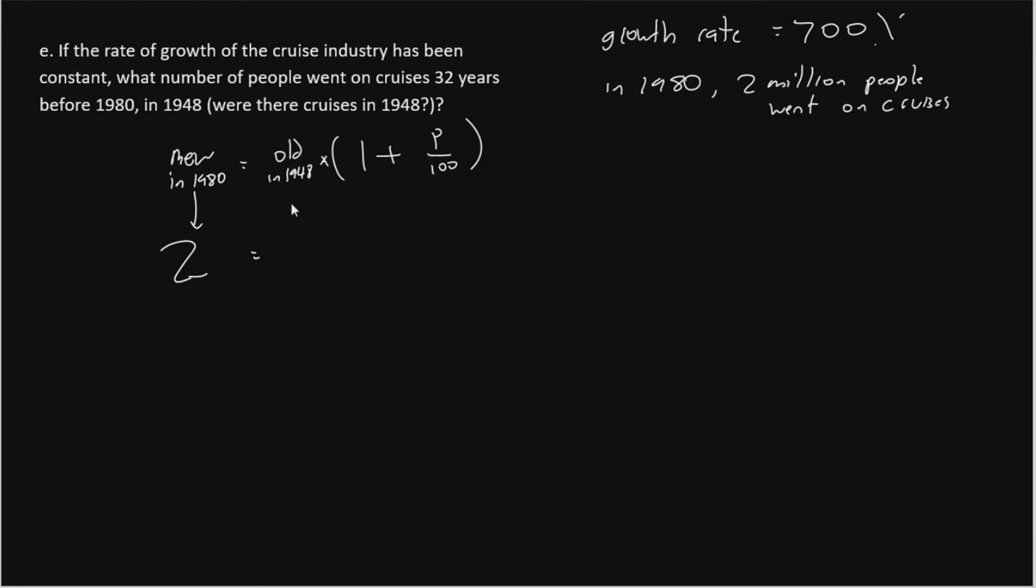So our new value from 1980 was 2 million. Our old value, we don't actually know what that is because they didn't tell us, so we'll just call it X. We will say times 1 plus the percentage, that was 700, divide by 100. Now in part D, we already found that 700 over 100 was 7. So 7 plus 1 is what we have inside the parentheses. Now 7 plus 1, of course, is 8. So we have 2 equals X times 8.